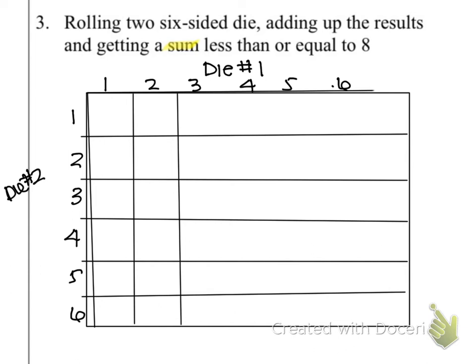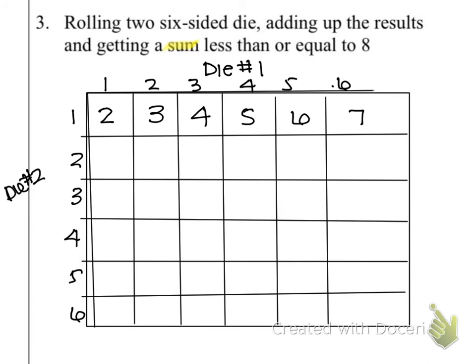What we're going to do as we're creating this, we're going to go through and fill in all the sums. Remember that a sum is when you add two things together. So as I go through, I'm just going to start adding the numbers. So one and one gives me a two, three, four, five, six, seven, and so on and so forth. I'm going to keep filling in my table to create some sort of a visual for my sample space.